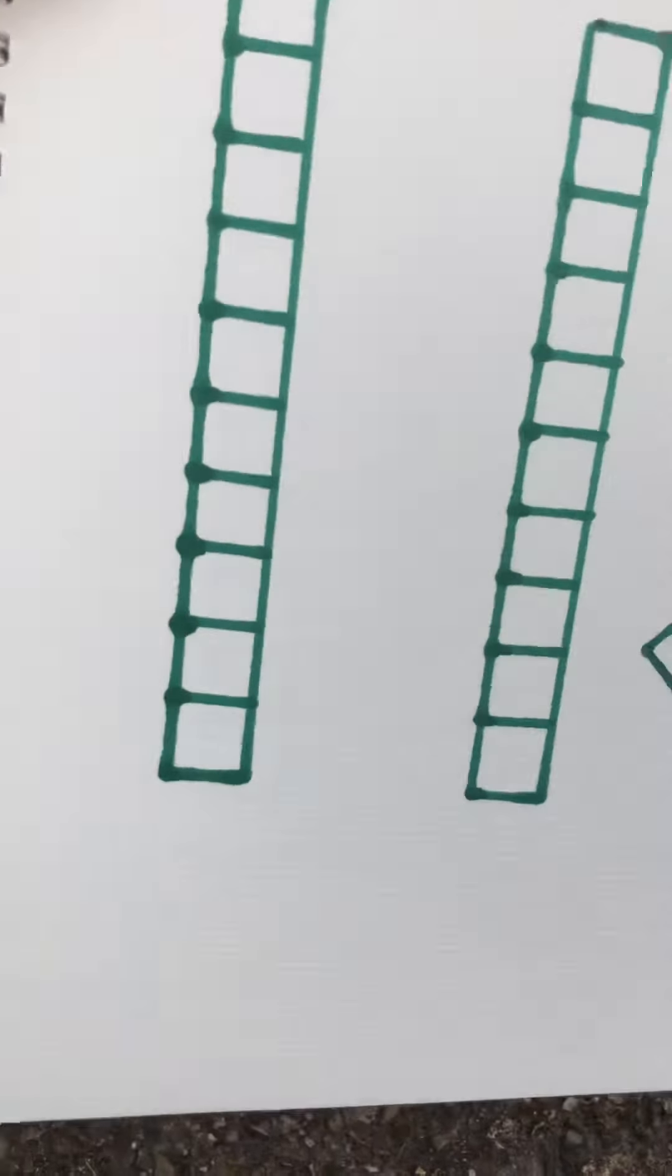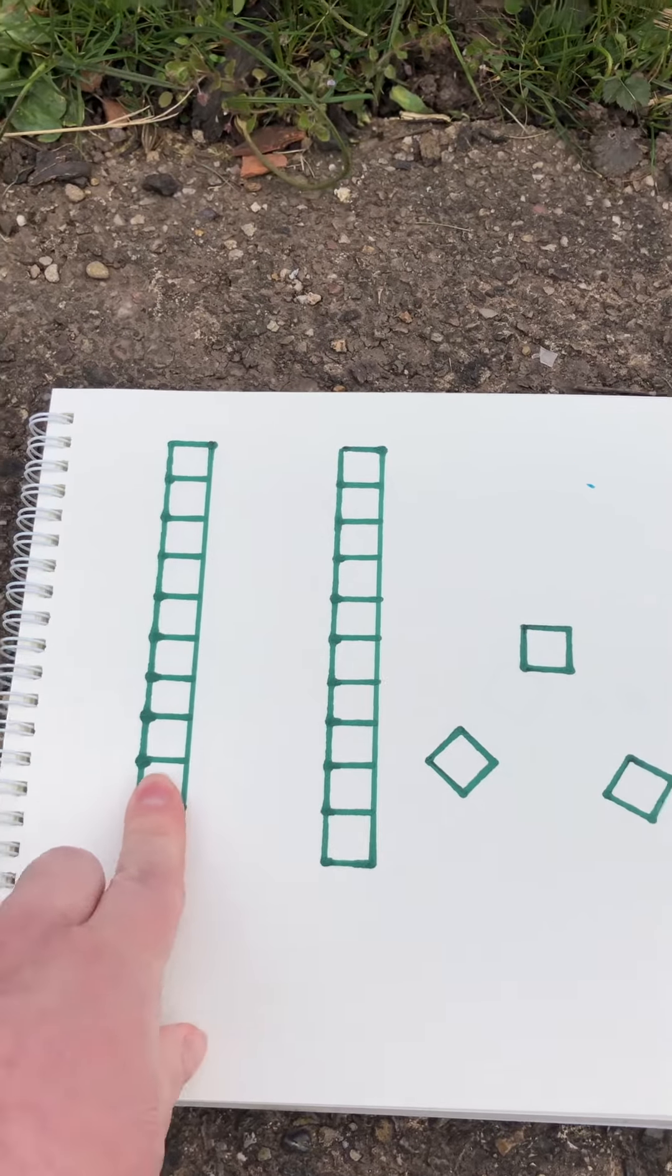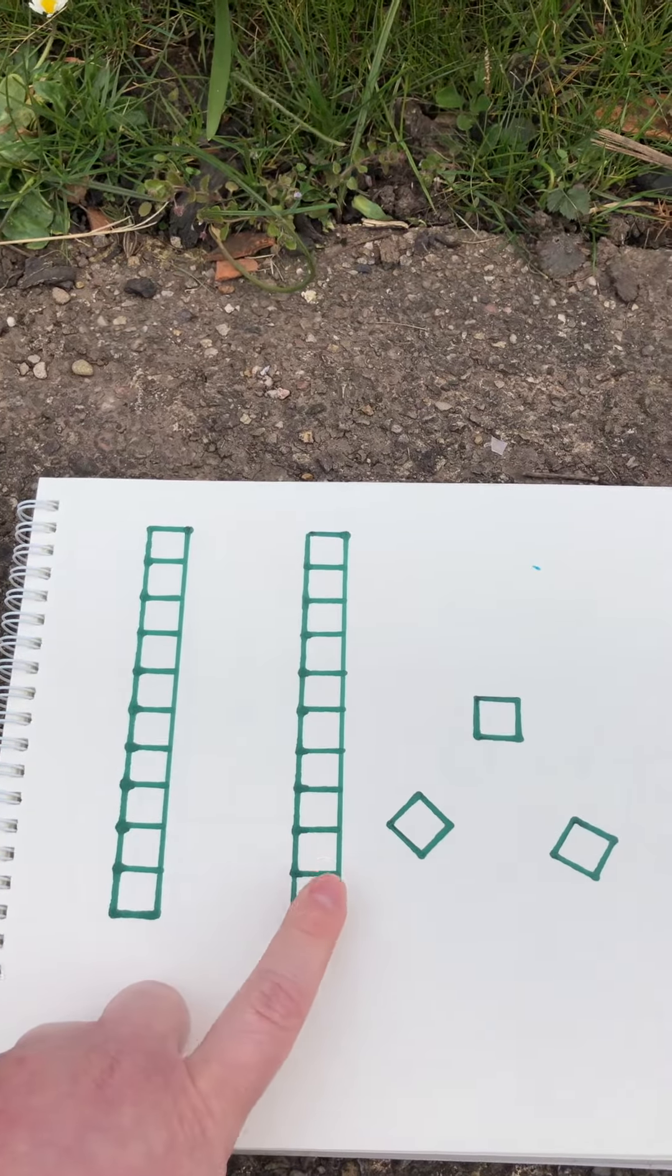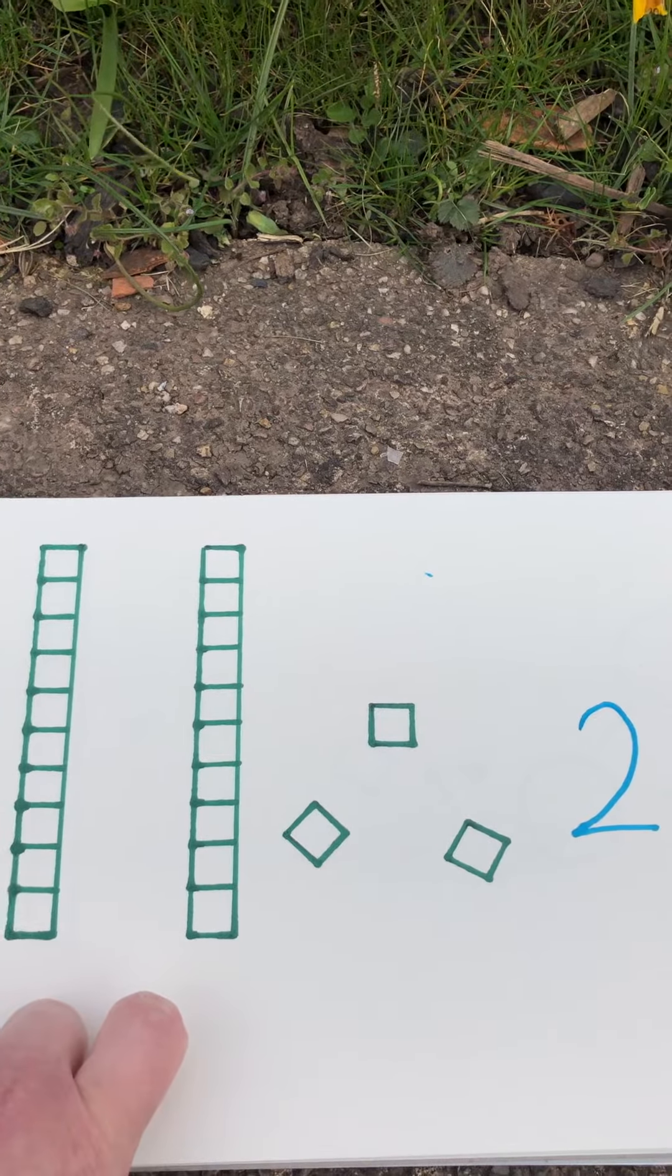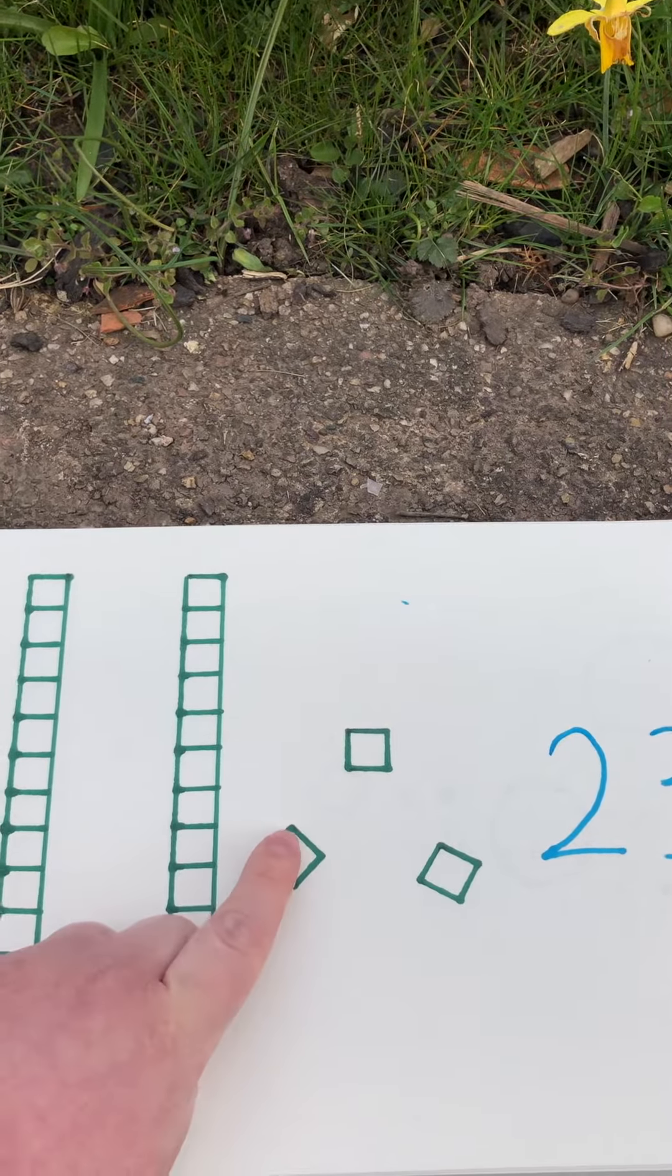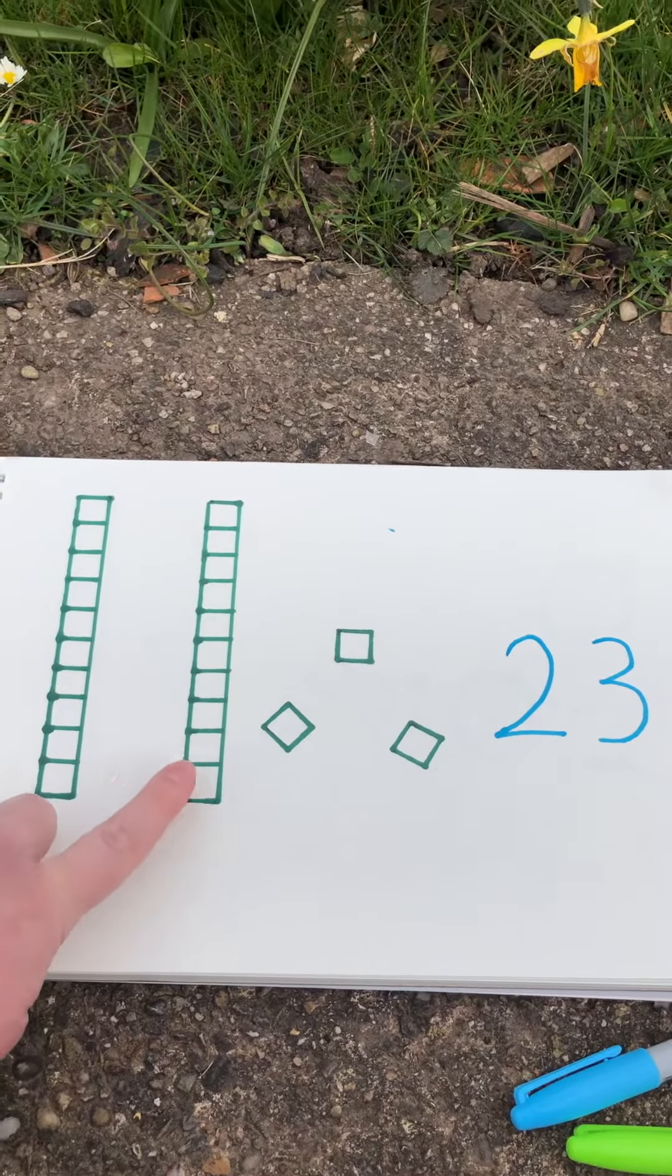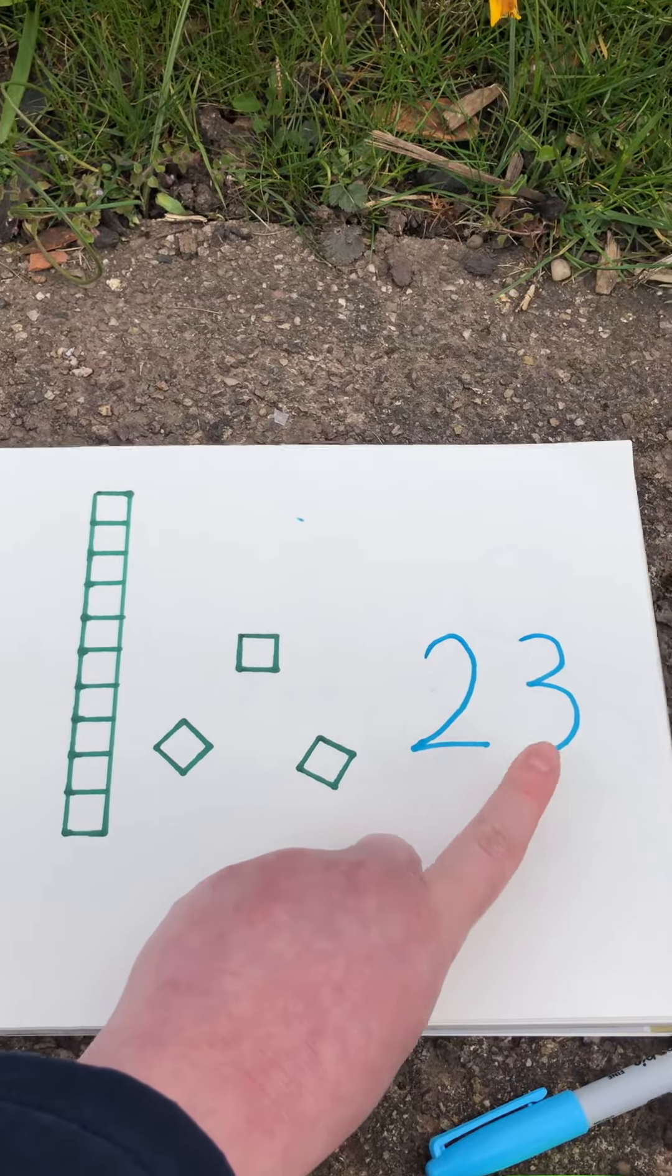So if we look at this one here, we have got one 10 and another 10. So 1 and 1 is 2. So we know this number has two tens. How many 1's does it have? 1, 2, 3. So this has two tens and three 1's, which makes the number 23.